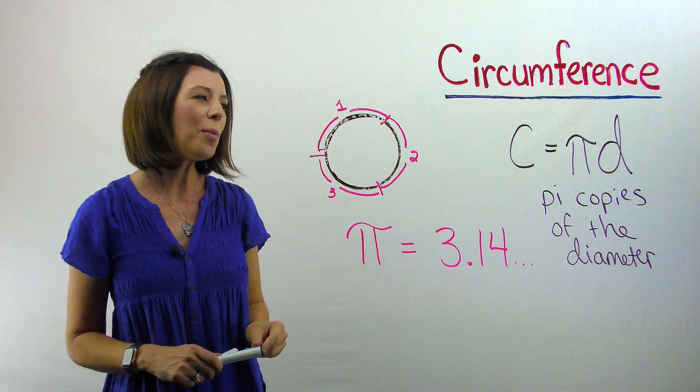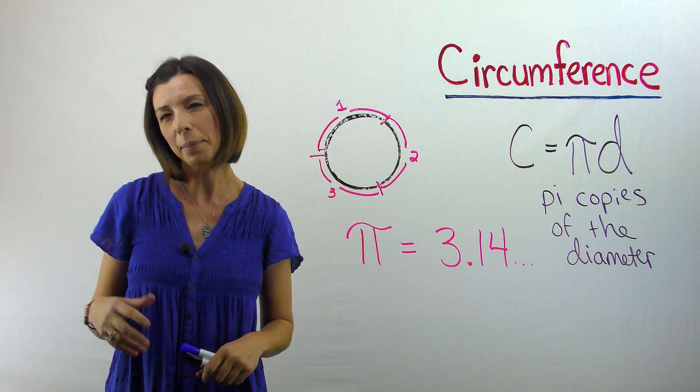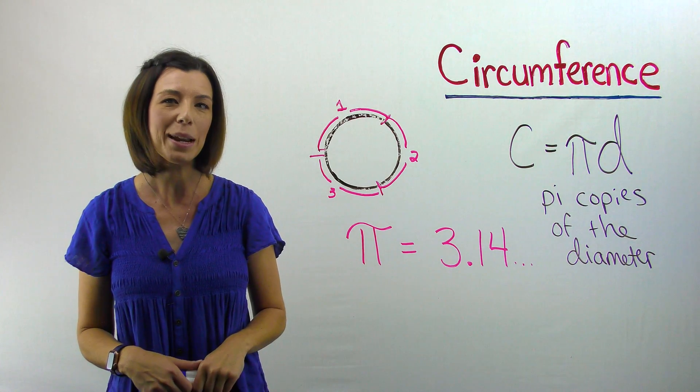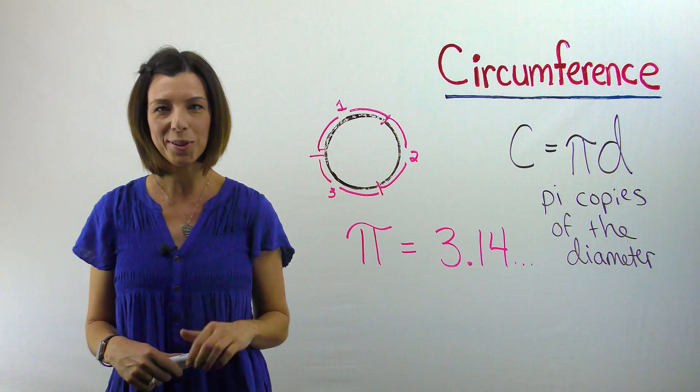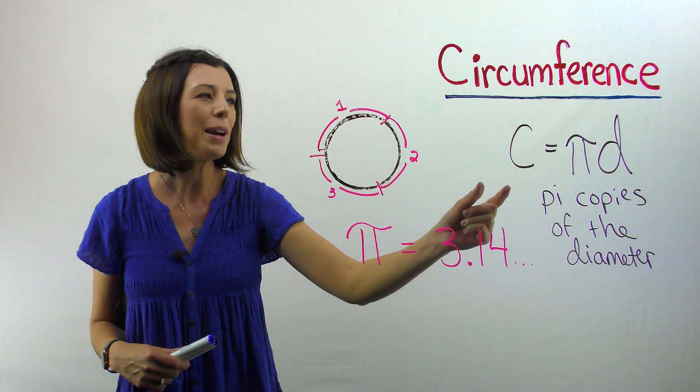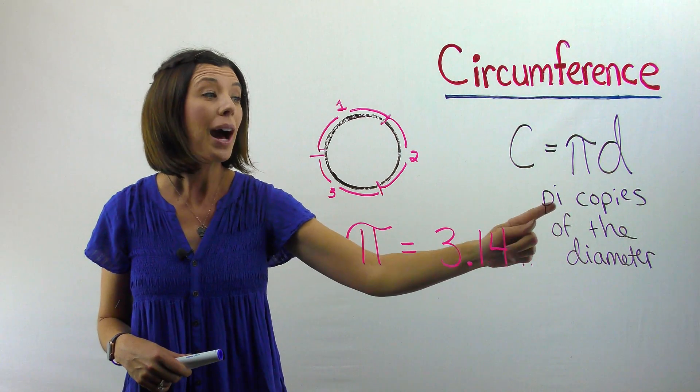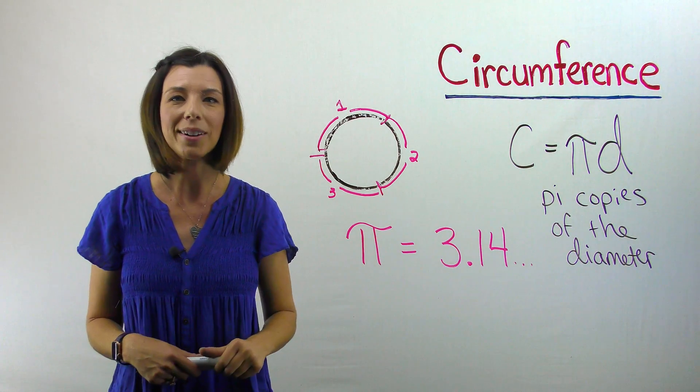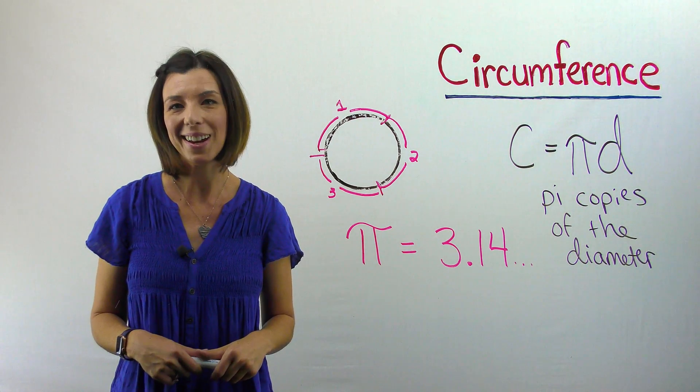So when I think of pi copies of, can I think of three and a little bit more copies of the diameter? Isn't circumference the distance around the circle? So if I'm going to measure the circumference of a circle, all I need to do is take pi copies of the diameter. This is where we get the formula circumference equals pi times diameter.